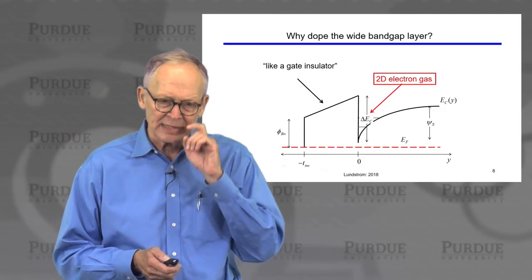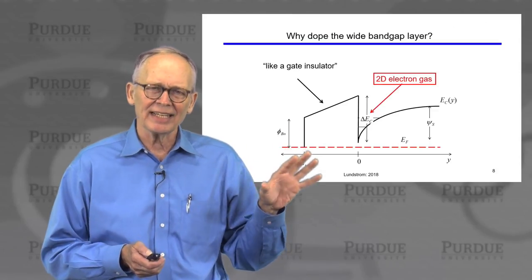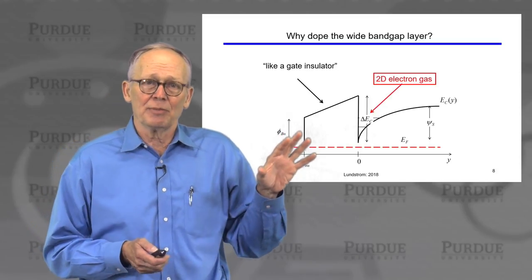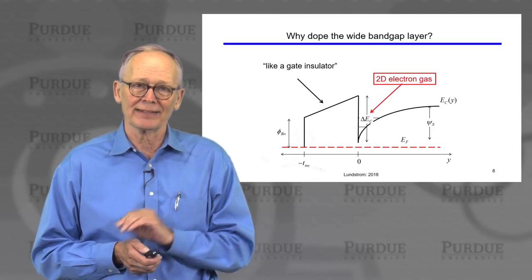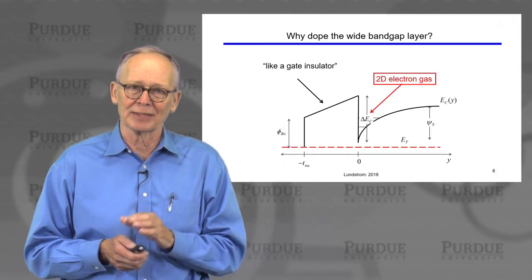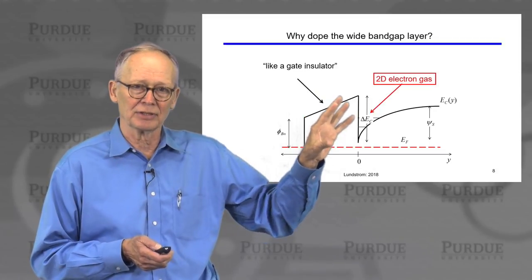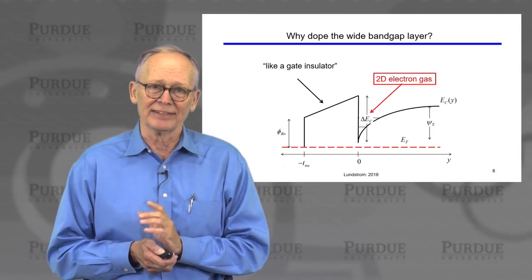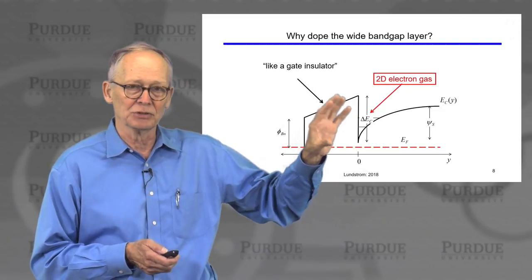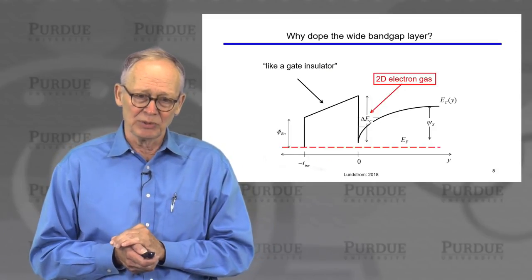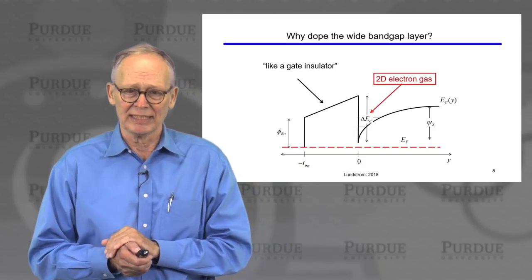The thickness of the wide-bandgap layer is labeled T_INS, like the thickness of a gate insulator in a MOSFET — we think of it similarly. You might ask why we need to dope it at all, since we don't dope the SiO₂ in a MOSFET. The reason is that SiO₂ has a very large bandgap, allowing large voltages to pull the bands down and create an inversion layer. The heterojunction wide-bandgap material doesn't have a bandgap nearly as wide as SiO₂, so we can't induce inversion charges by gate voltage alone — we really do need to dope that semiconductor layer.